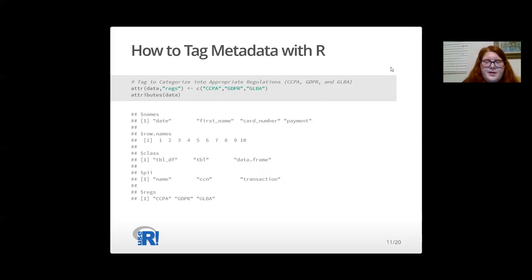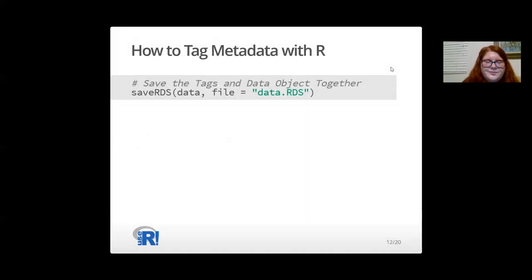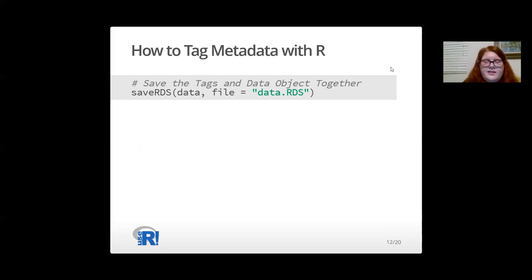Another method of tagging metadata would be to build a model to detect which sensitive attributes are in a dataset or database and tag the data asset accordingly. However, that is beyond the scope of this talk. To permanently save these additional attributes to our data object, we can save our data object as an RDS file with the saveRDS() command.